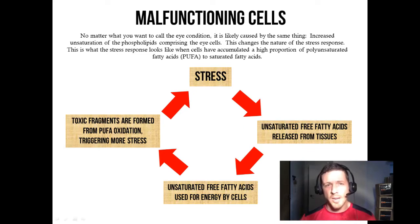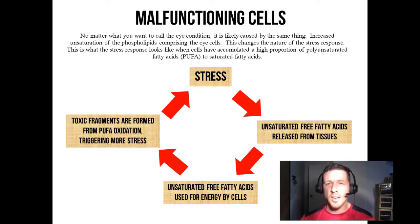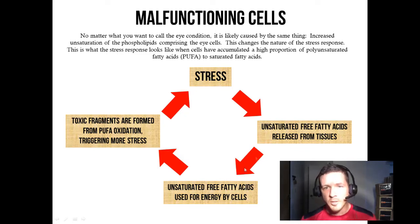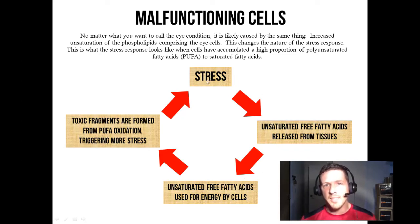Because unsaturated fatty acids are so unstable, toxic fragments are formed from their oxidation, triggering more stress. One example of these toxic fragments is prostaglandins, though it depends on which kind of fatty acid we're talking about. What we're looking at is a vicious cycle of stress caused by the oxidation of unsaturated fatty acids — the stress turns on and cannot switch off, and this is when aging and degeneration occurs.